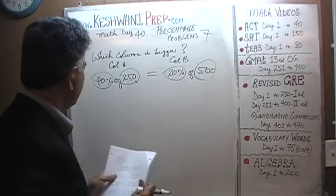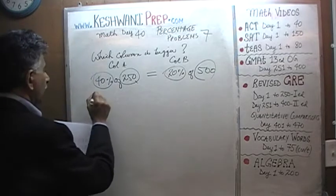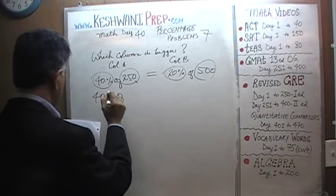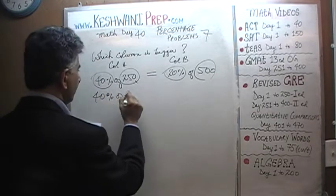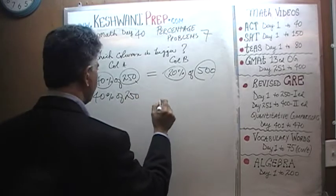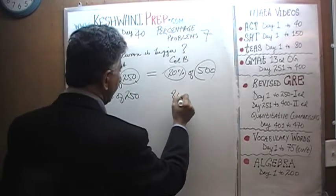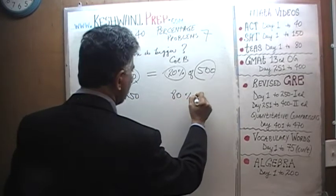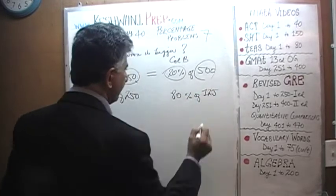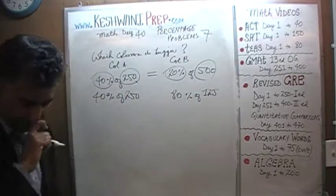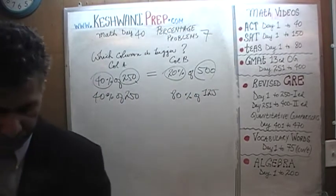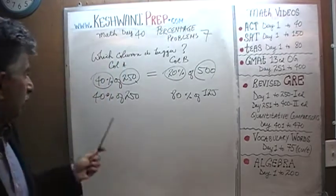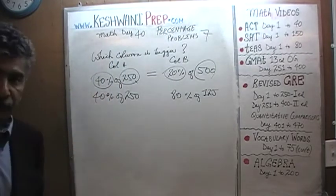How about 40% of 250 versus 80% of 125? Which one is bigger: 80% of 125 or 40% of 250?